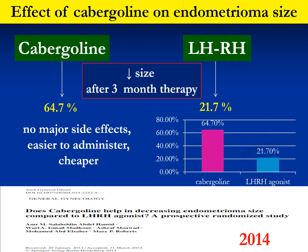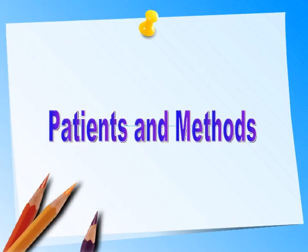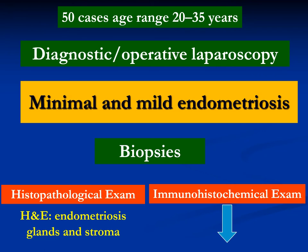In some randomized studies, dopamine agonists performed better than LHRH agonists. The decreased size of endometriotic lesions with cabergoline resulted in a decline of approximately 65%, while LHRH decreased the size by only 21–22% after three months of therapy. The effect of dopamine agonists can be confirmed both clinically and by laparoscopic confirmation.